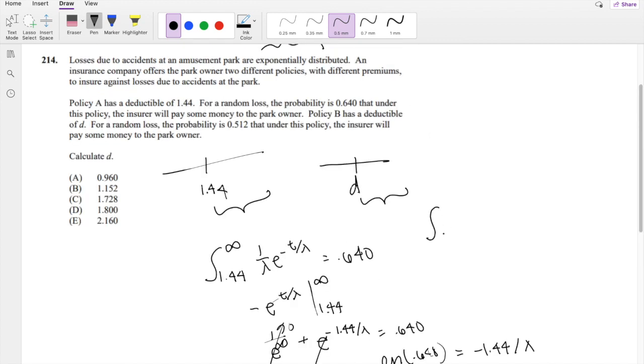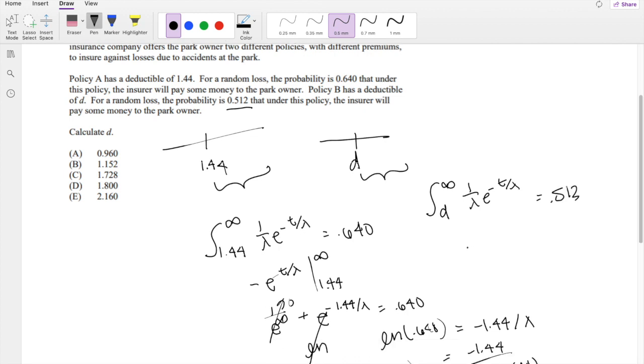So the right-hand side, it's the same idea. It's going from d to infinity, 1 over lambda, e to the negative t over lambda. And this side is equal to 0.512. So again, this just becomes negative e to negative t over lambda, evaluated from d to lambda.